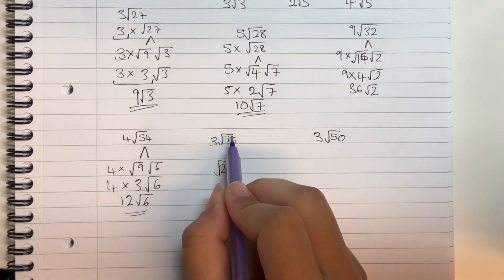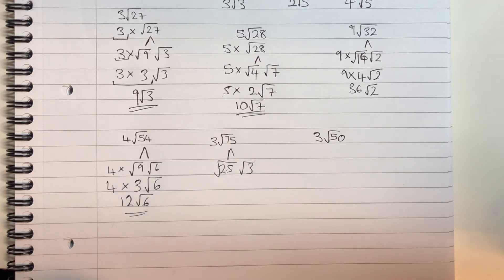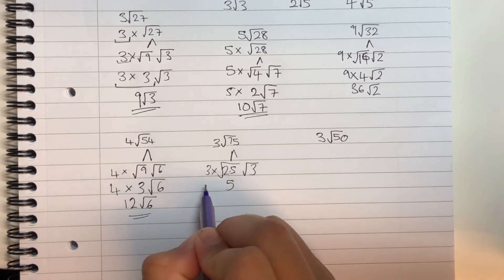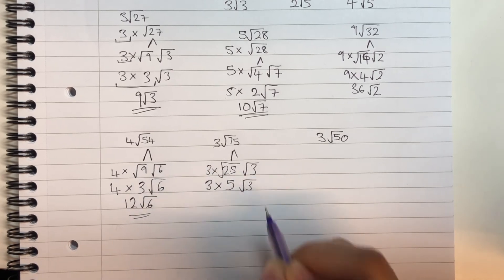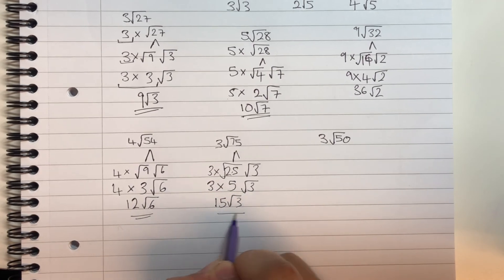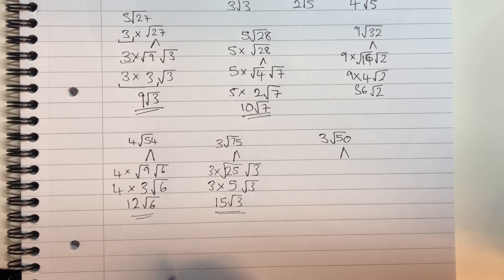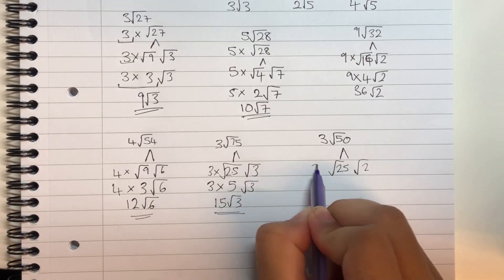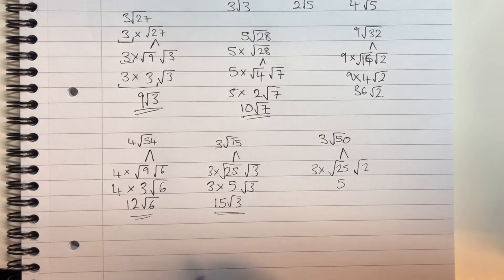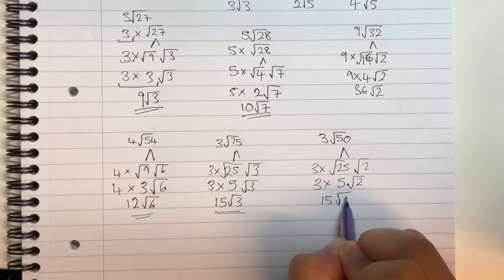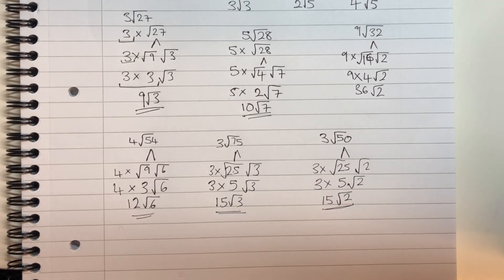For 3 root 75: the biggest square number is 25. 75 divided by 25 is 3. Root 25 simplifies to 5. So we have 3 × 5 × root 3, giving 15 root 3. For 3 root 50: the biggest square number is 25. 50 divided by 25 is 2. Root 25 simplifies to 5. 3 multiplied by 5 gives 15, leaving 15 root 2. And that's how to simplify thirds.